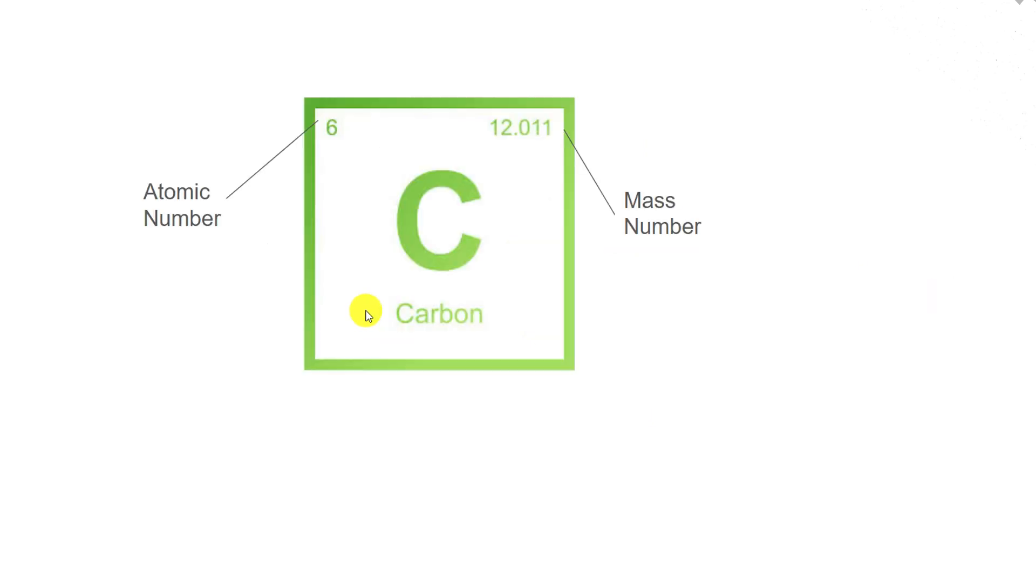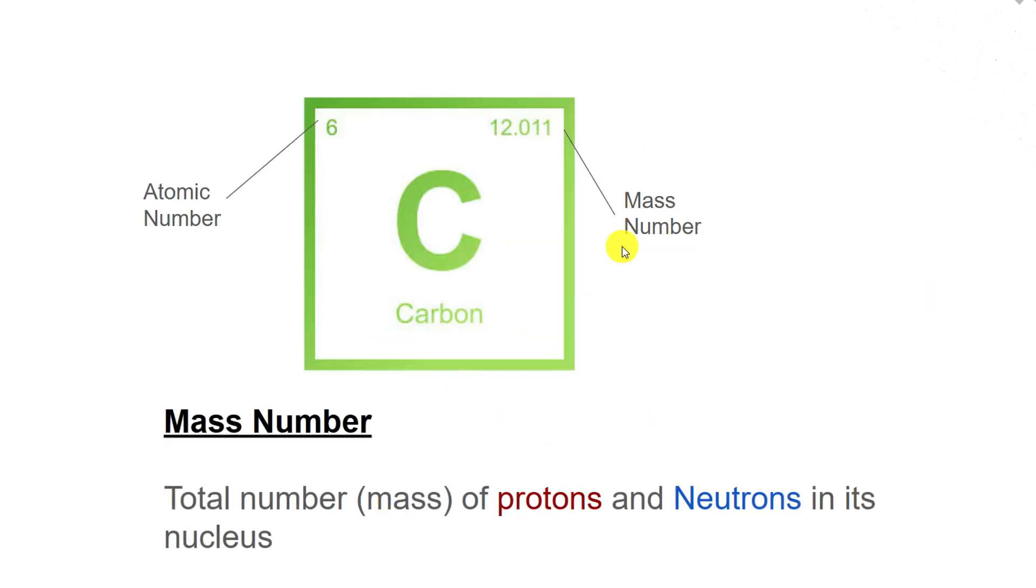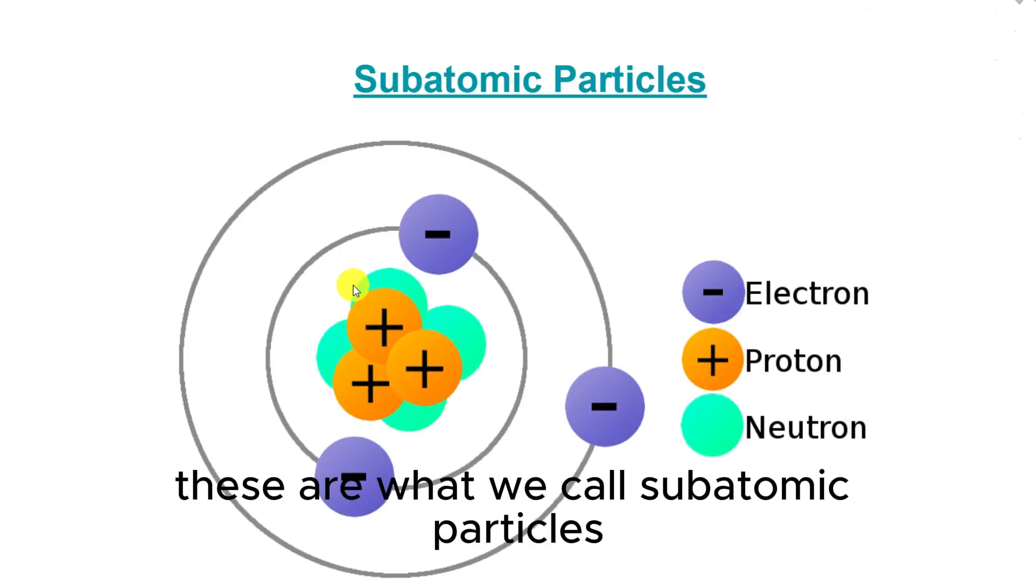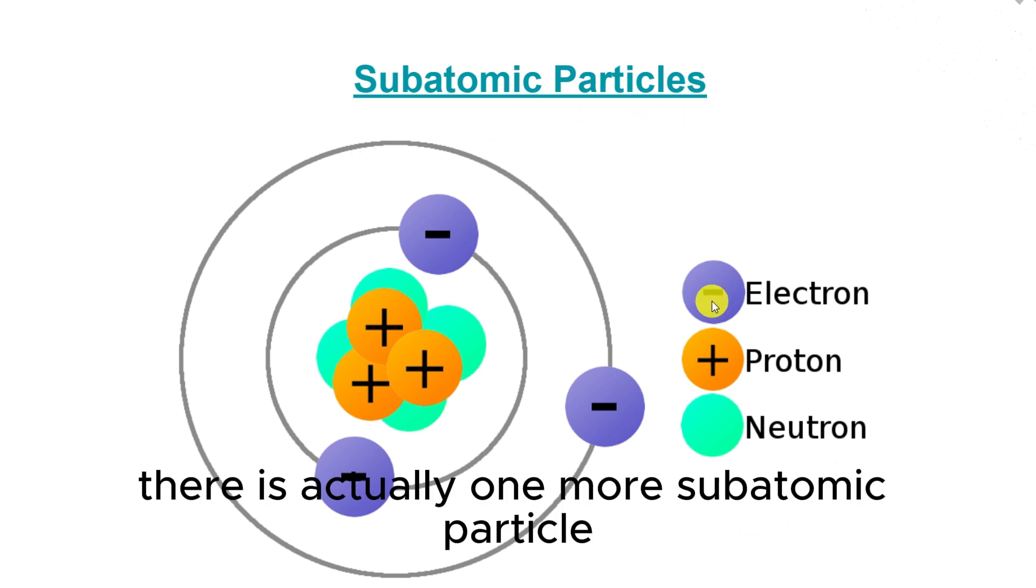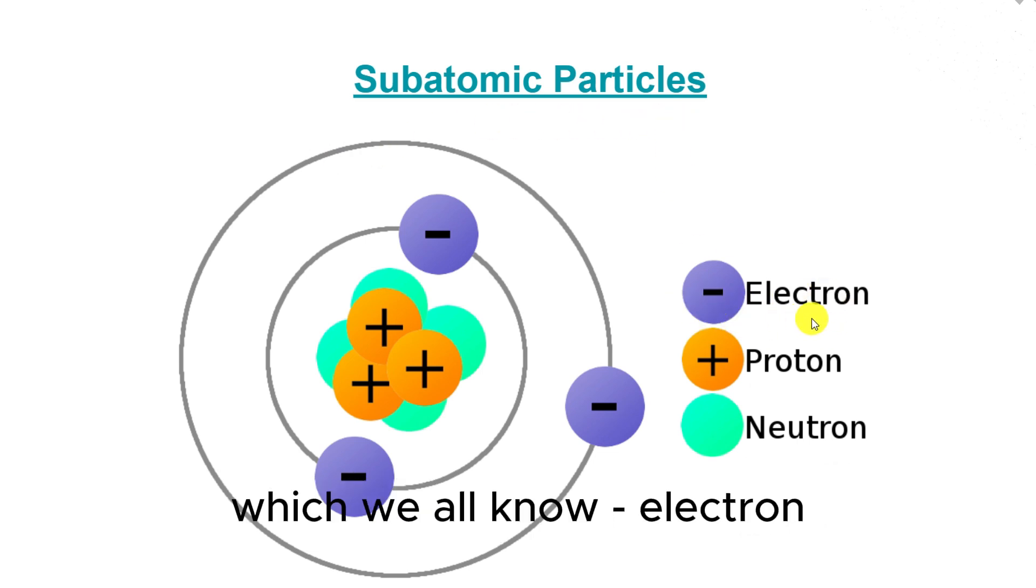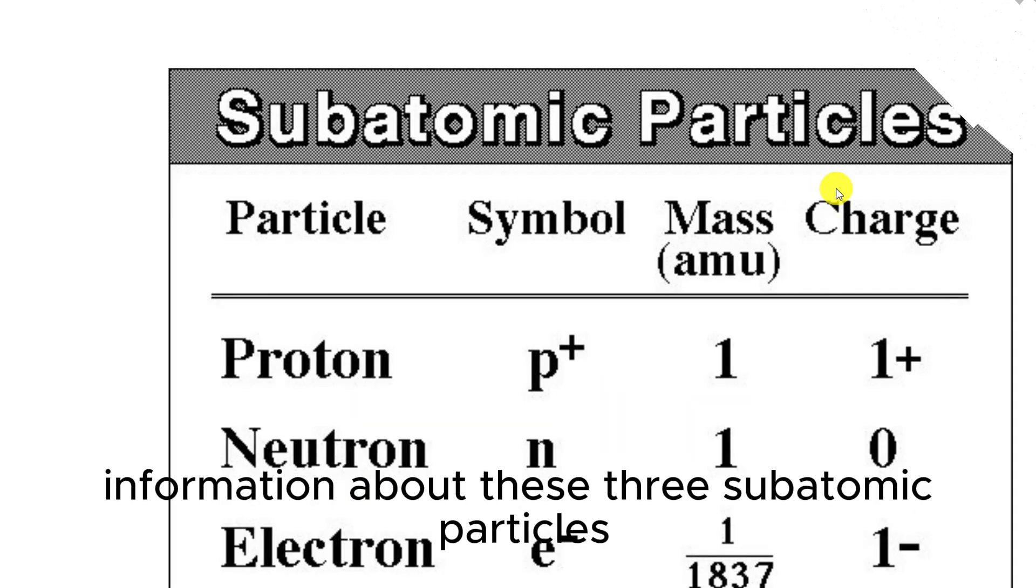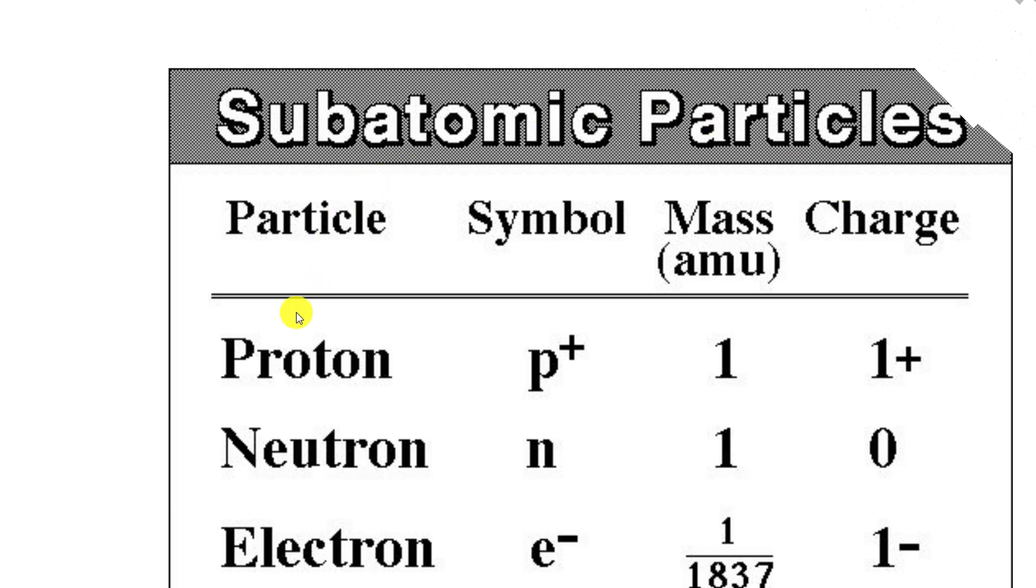The mass number of an atom is the total number of protons and neutrons in its nucleus. So what is a proton or a neutron? These are what we call subatomic particles. There is actually one more subatomic particle which we all know, the electron. Here is a table with the basic information about these three subatomic particles.